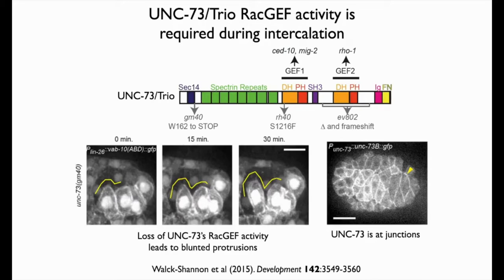TRIO family GEFs have two GEF domains: a Rho-specific GEF2 domain and a RAC-specific GEF1 domain that is also specific for Rho-G. Mutants are available that abrogate either domain. Elise showed that a GEF2 mutant is normal for intercalation, but GEF1 mutants have defects that look like RAC loss-of-function phenotypes — the same blunted protrusions. Loss of UNC-73's RAC-GEF activity leads to impaired protrusions, and UNC-73 GFP is expressed at the right time in intercalating tissues.